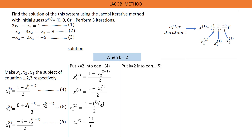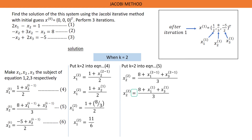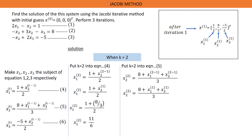Put K equals 2 into equation 5. Solving this gives us S2^(2) equals 8 plus S1^(1) plus S3^(1) all over 3. S1^(1) is 1/2 and S3^(1) is -5/2, so we replace those values. Hence, S2^(2) equals 2.